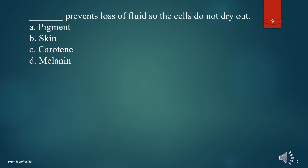What prevents the loss of fluid so the cells do not dry out? A. Pigment. B. Skin. C. Keratin. D. Melanin. The answer is B. Skin.